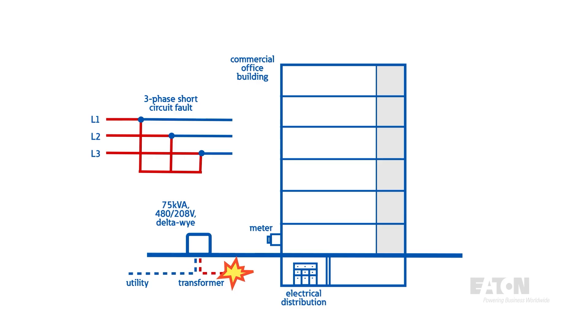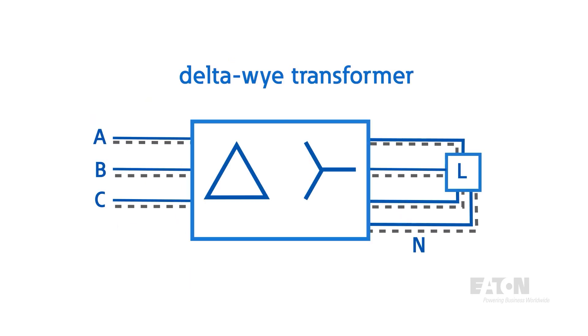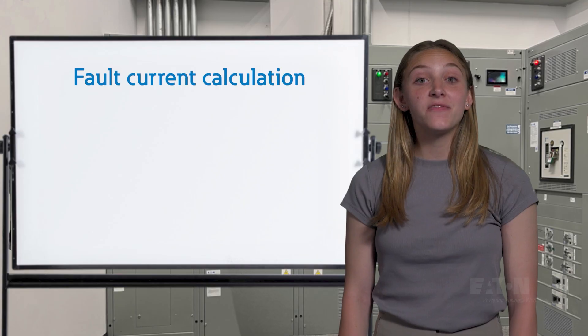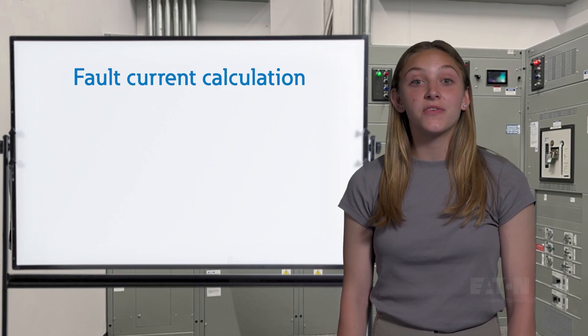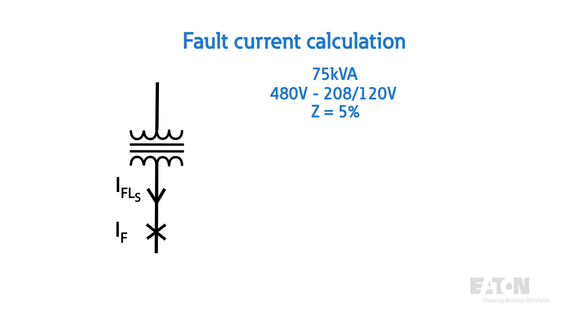All of our loads were in parallel before, and now we've introduced another branch that's a dead short. Due to Ohm's law, a lot of the current will want to flow through this new branch. We can estimate the fault current by first calculating the full load amps of the transformer secondary and then dividing by its internal impedance.